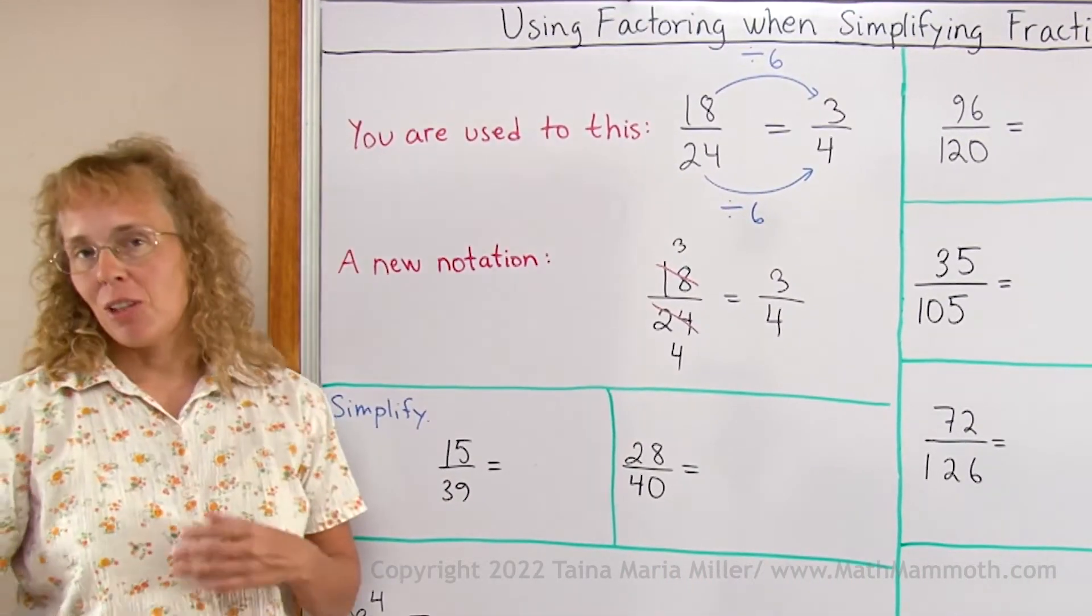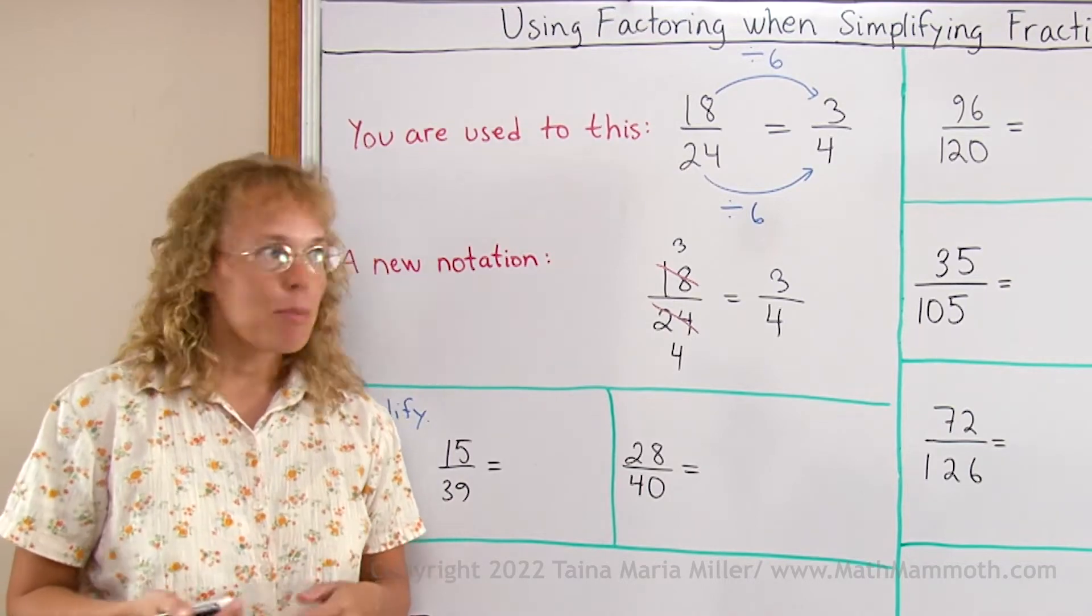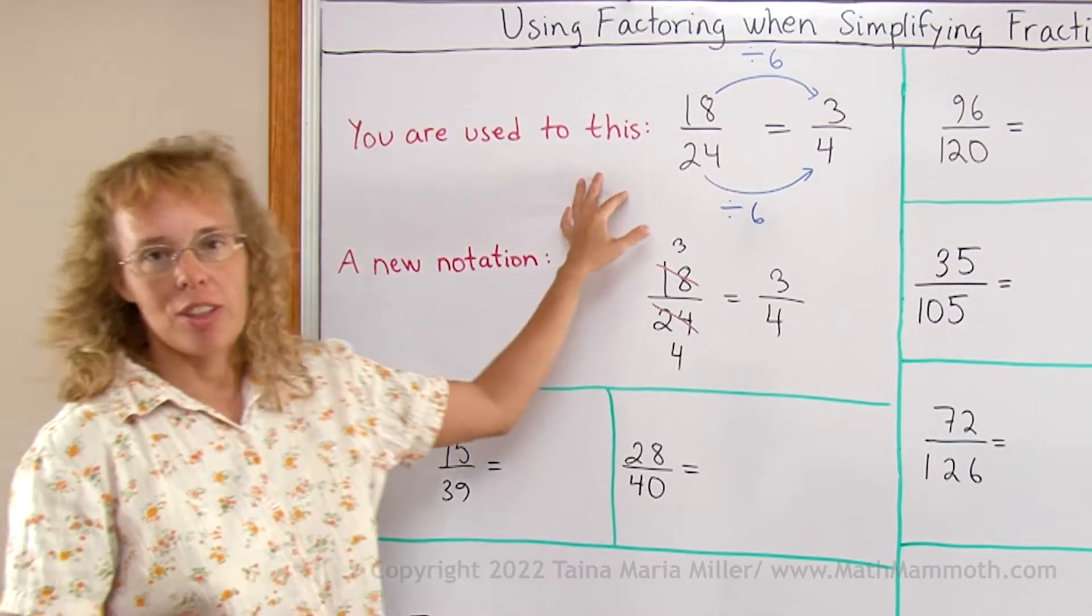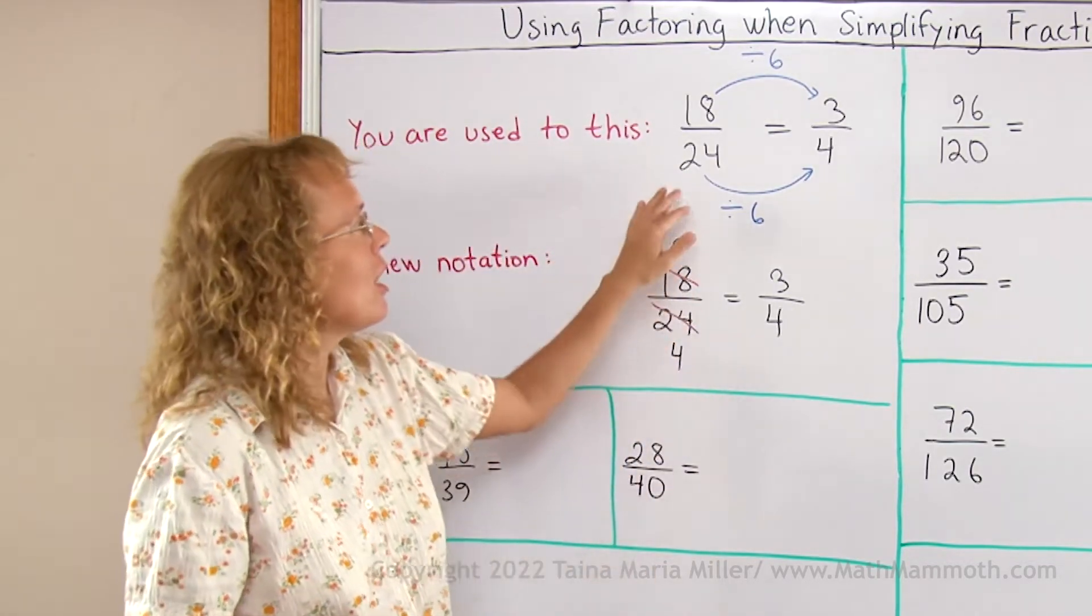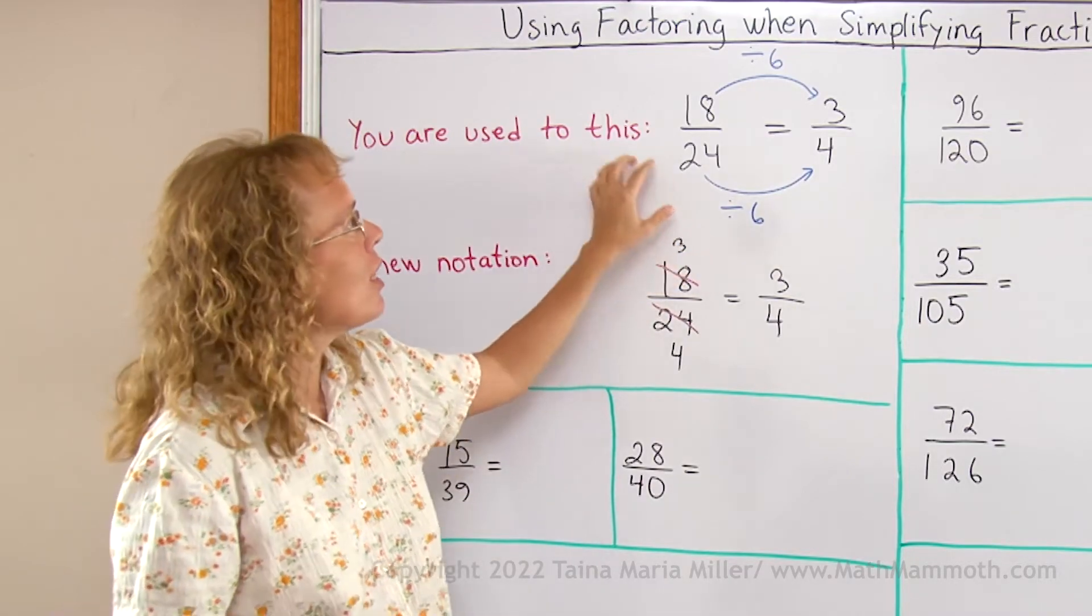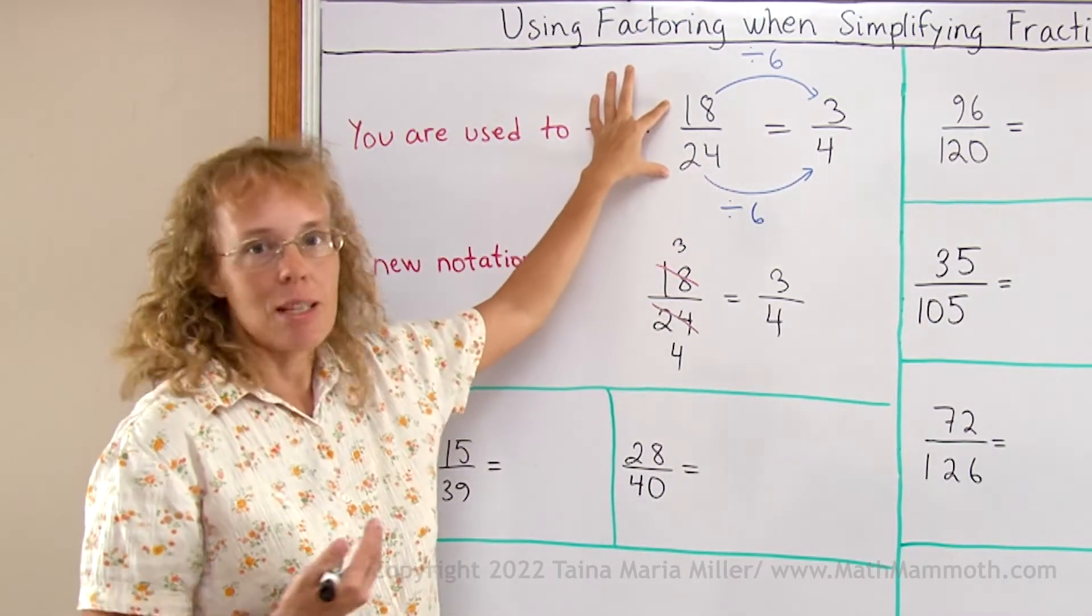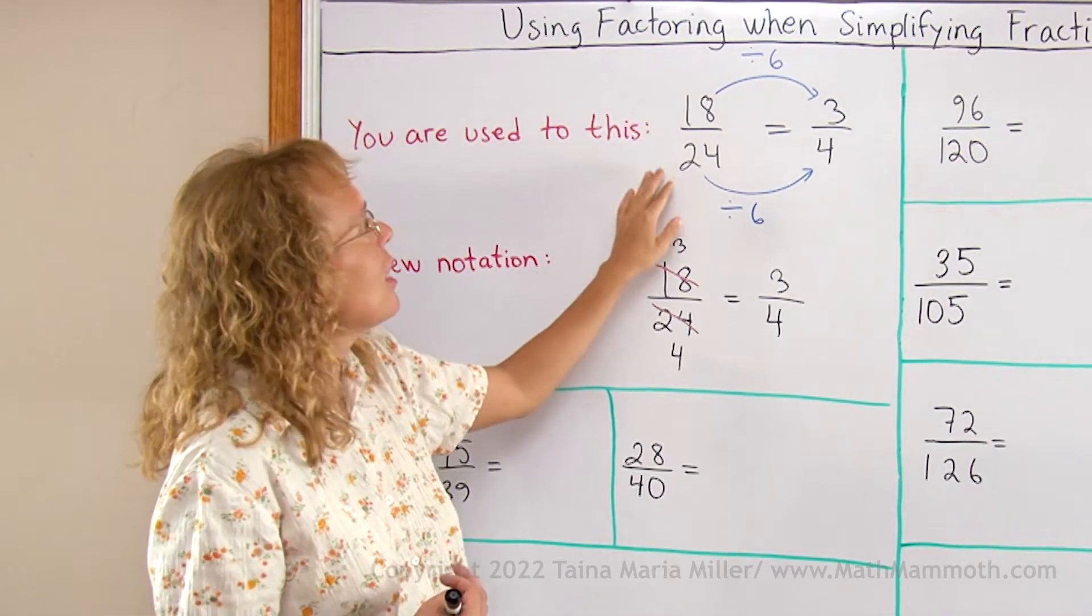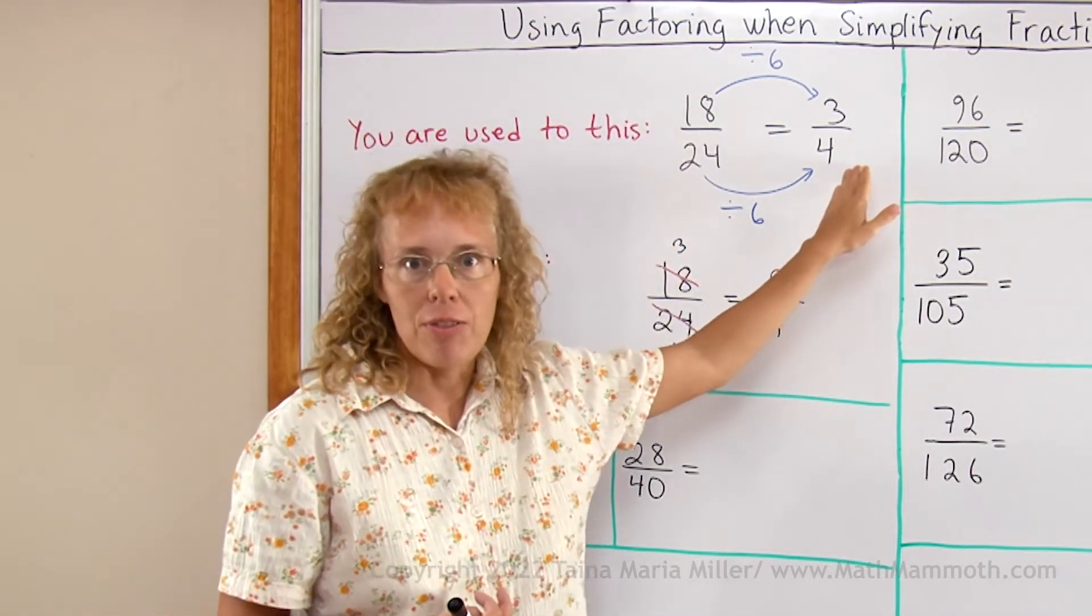Now if you're a follower of my curriculum, MathMammoth, you might be used to this kind of notation for simplifying fractions. I've used the arrow notation where we have 18 over 24, and both of these numbers are divisible by 6, so then we simplify and get 3 fourths.